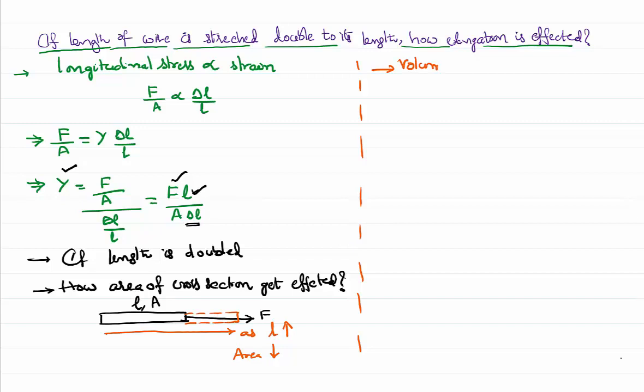Then we need to see what remains constant. I would like to say the volume of the material remains constant. Volume of the wire, which is nothing but the product of area of cross section and increase in the length, is going to remain constant.